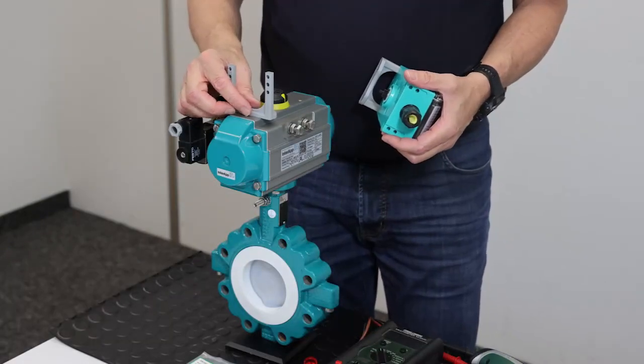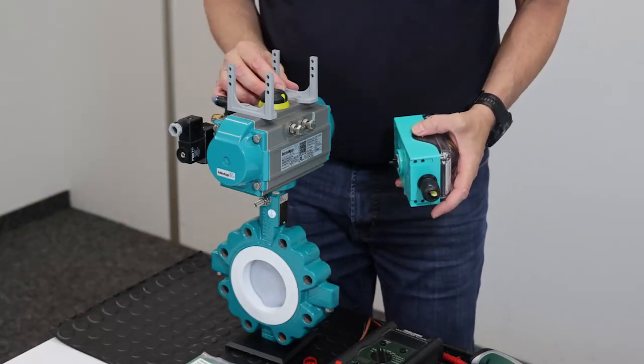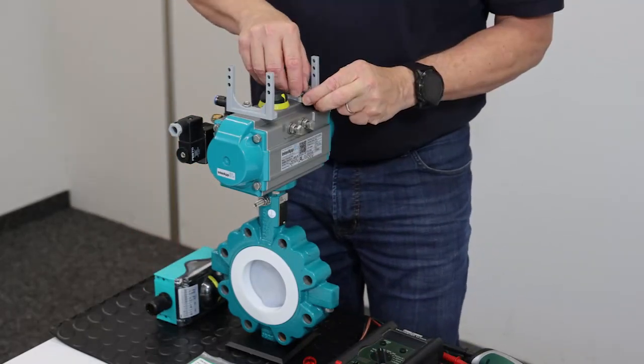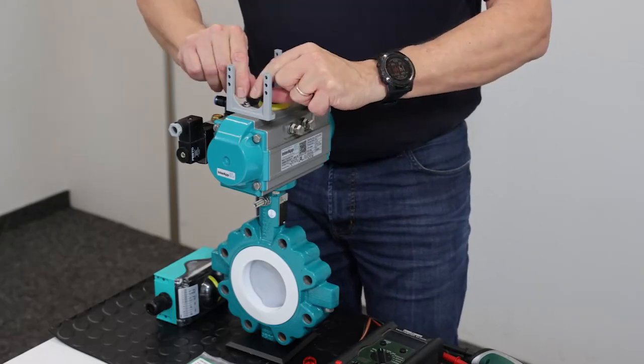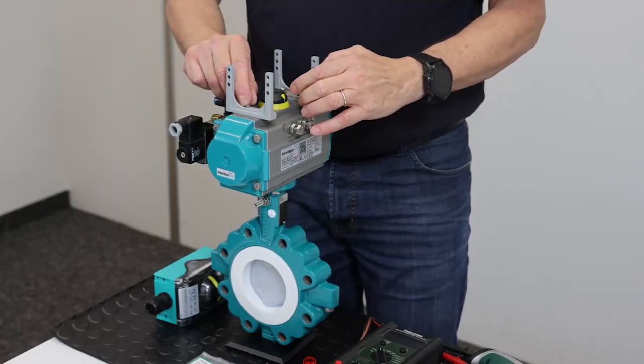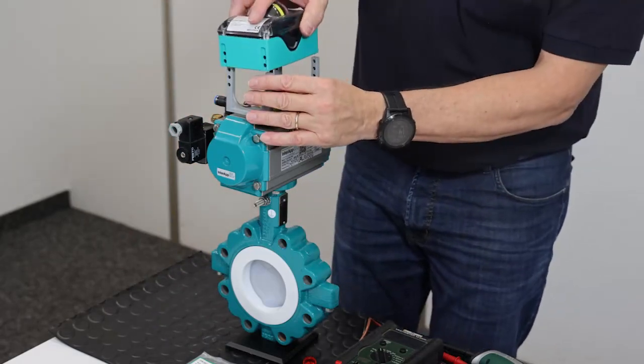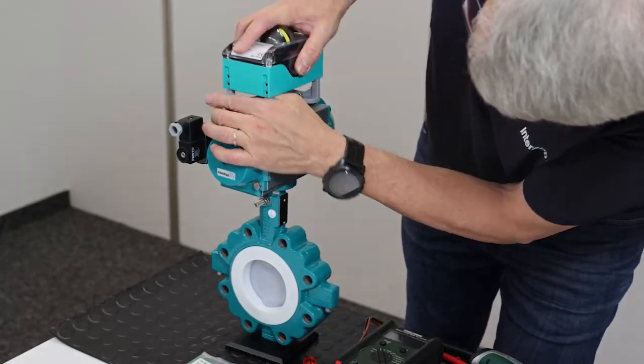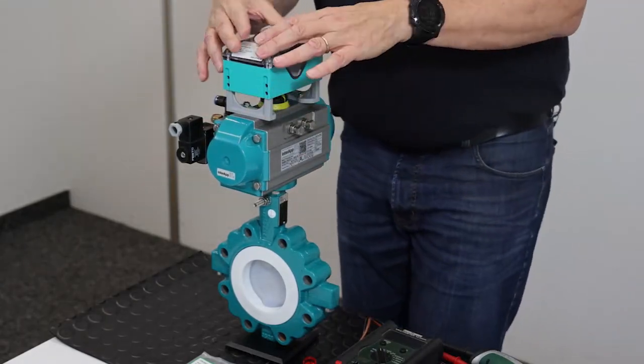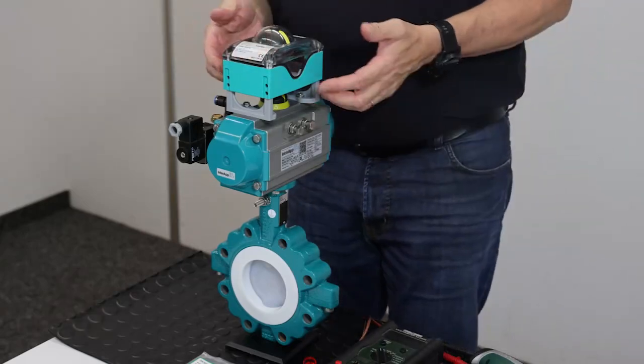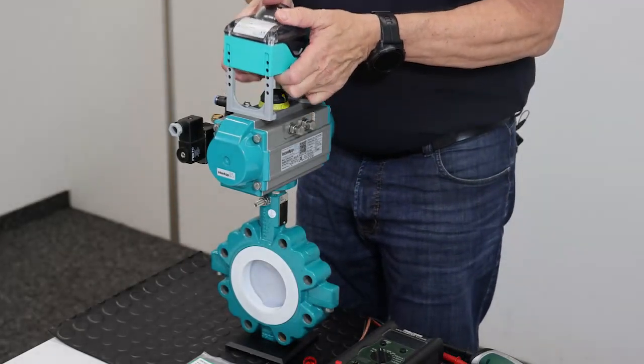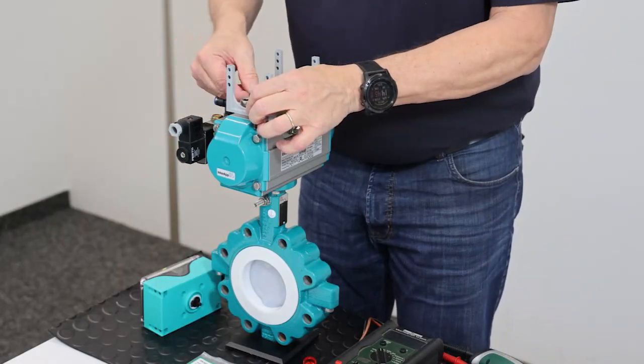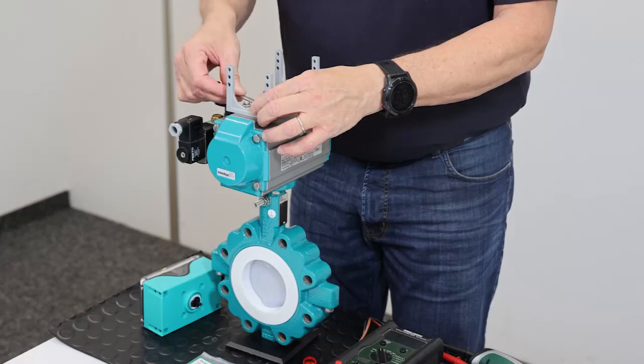I can screw from the top, which is much faster. Do not tighten fully. Then I place the limit switch box on the legs to control. Everything is okay. Now I can tighten the screws completely.